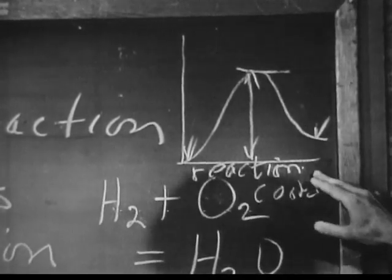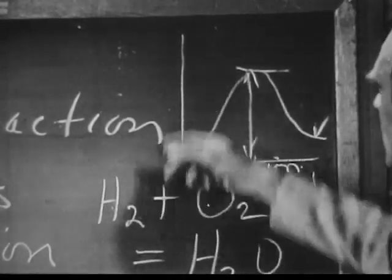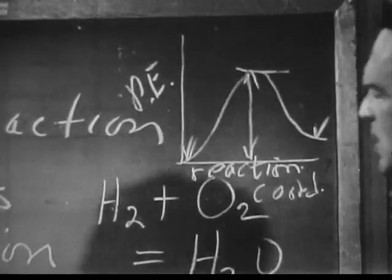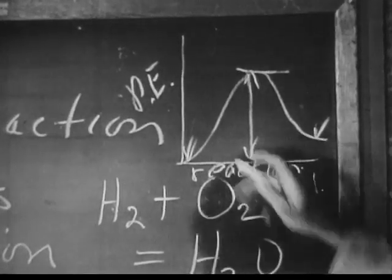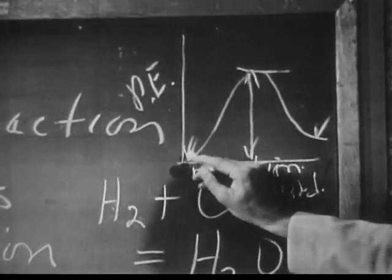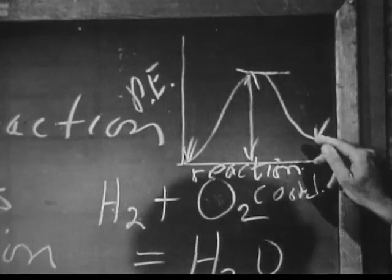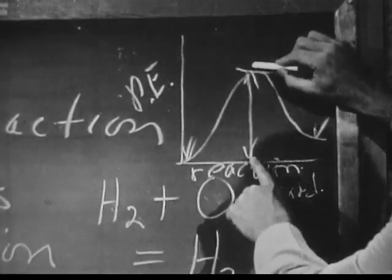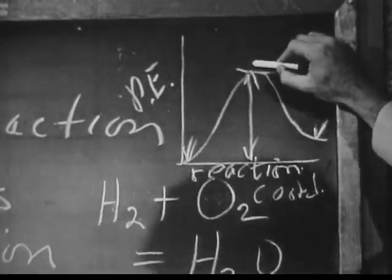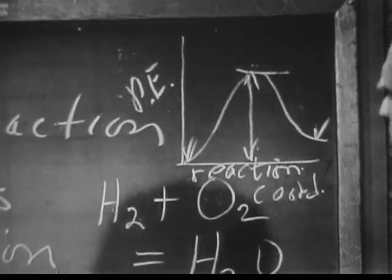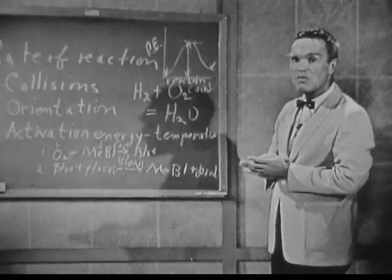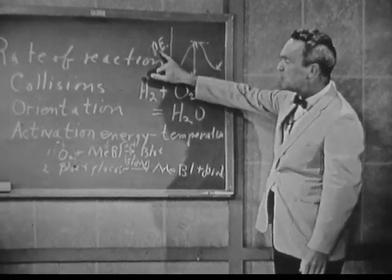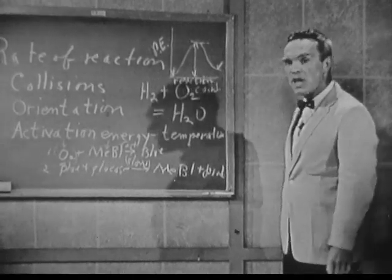If we plot this complicated function against the potential energy, we find that for typical actual reactions, we get a curve of this nature. This is the potential energy of the reactants, this is the potential energy of the products. The difference in energy between the reactants part of the curve and the top is the activation energy — the energy necessary for a reaction to occur. Let's now look at one of the chem study films on kinetics of chemical reactions, to see some mechanisms in which potential energy is plotted against reaction coordinates.